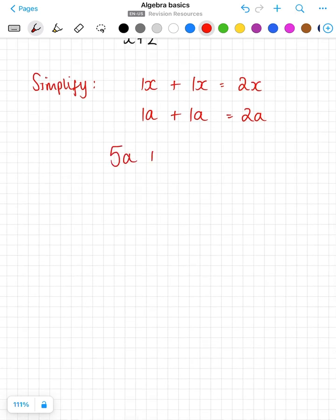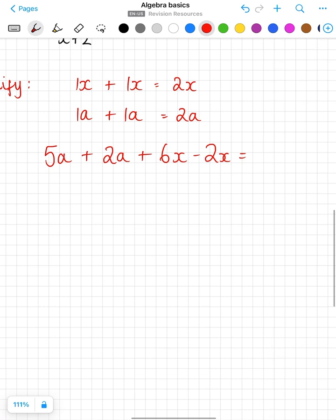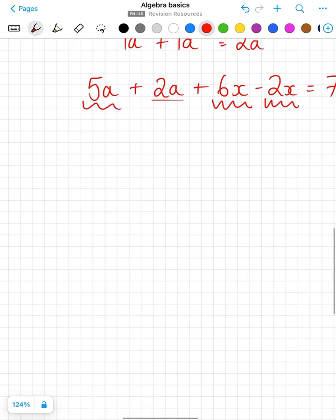So 5a plus 2a plus 6x minus 2x, only like terms can be collected. 5 apples plus 2 apples is 7 apples, then we've got 6 bananas minus 2 bananas leaves you with four bananas.